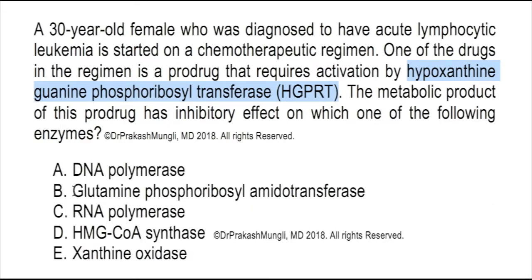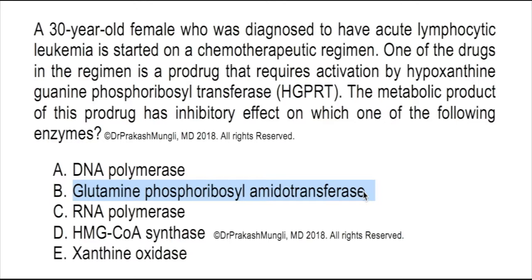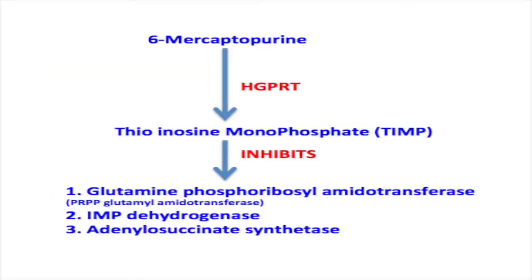This thioinosine monophosphate (TIMP) goes on to inhibit glutamine phosphoribosyltransferase — one of the most regulated enzymes in purine de novo biosynthesis. By inhibiting this enzyme, de novo biosynthesis of purines is decreased, meaning tumor cells have fewer purines for cell proliferation — for DNA and RNA synthesis — thereby decreasing the tumor cell mass. That is the mechanism of 6-mercaptopurine.